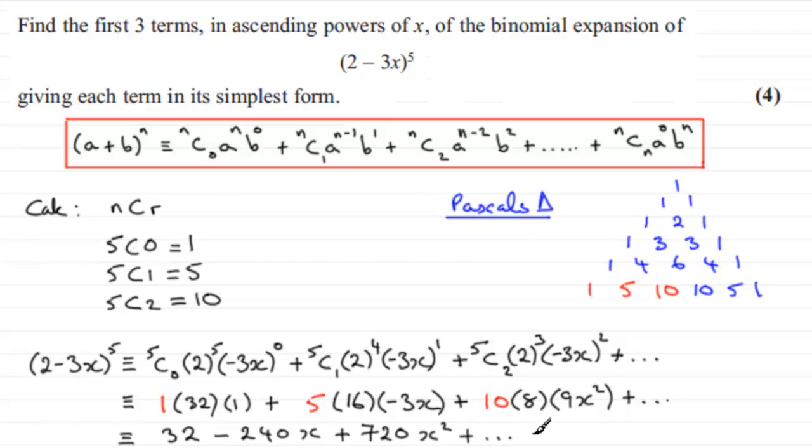OK, so let's give you a bit of background then as well on how we can use the binomial expansion methods to expand 2 minus 3x in this example to the power of 5.